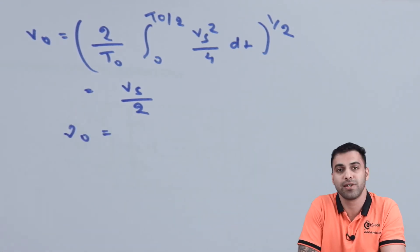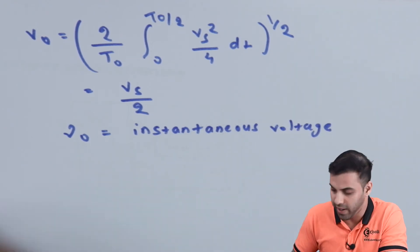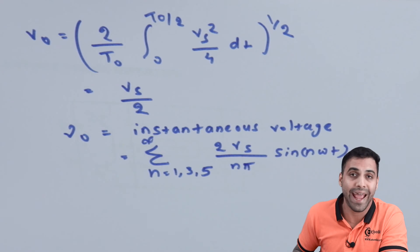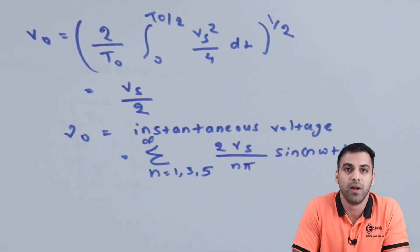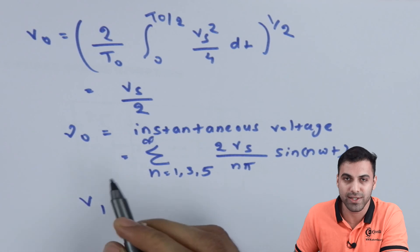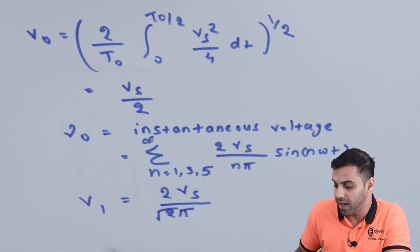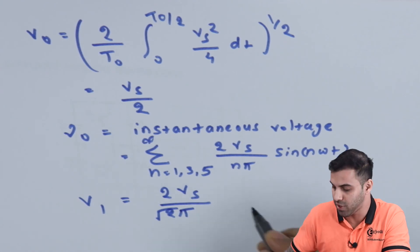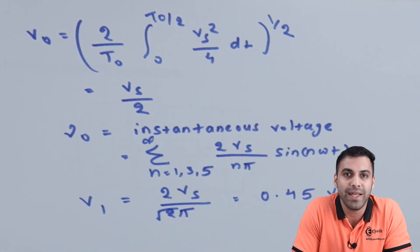The instantaneous voltage is the voltage at any point in time, and it is given by the summation from n = 1, 3, 5 to infinity of (2Vs / nπ) sin(nωt). The RMS value of the fundamental wave, V1, is given by 2Vs divided by root 2 times π, which equals 0.45 times Vs.